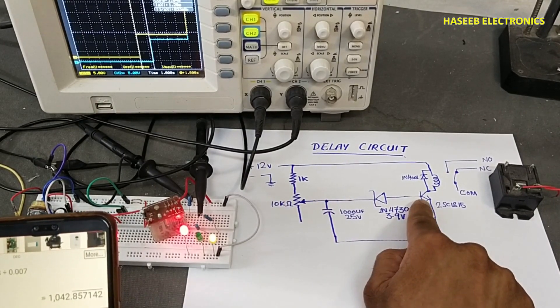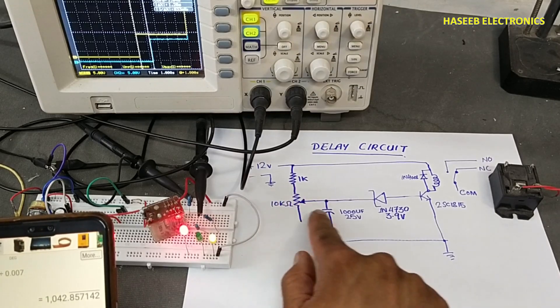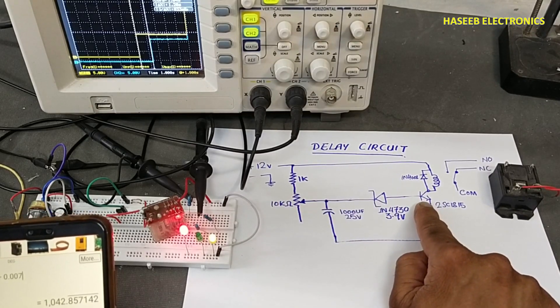If you use lower value resistance, at that time this current can increase and this transistor will damage.